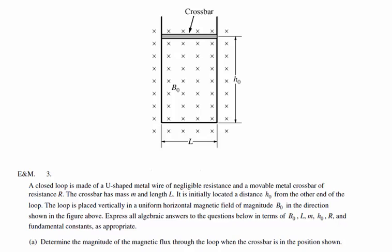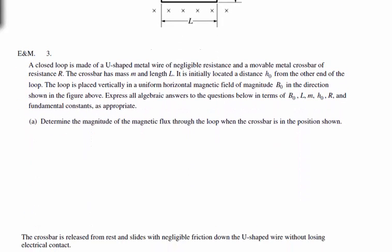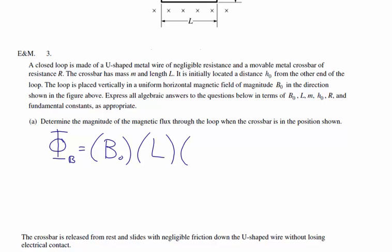Magnetic flux is magnetic field times area — it's the integral of B with respect to dA. But if it's a uniform magnetic field, that's just the magnetic field times the area. The loop area is h₀ times L, so the magnetic flux when the bar is in this position is going to be B₀ times L times h₀.